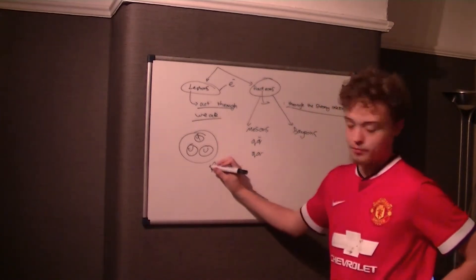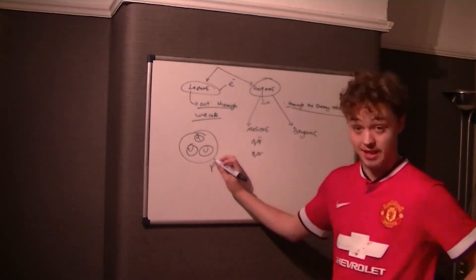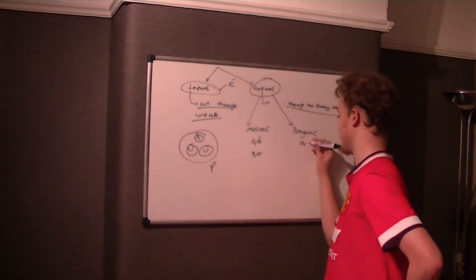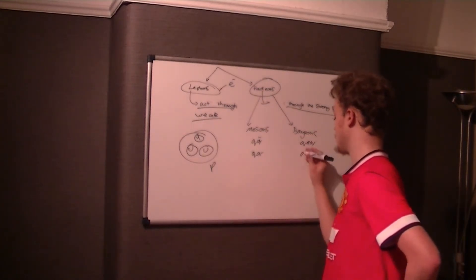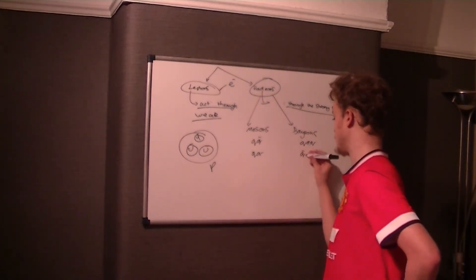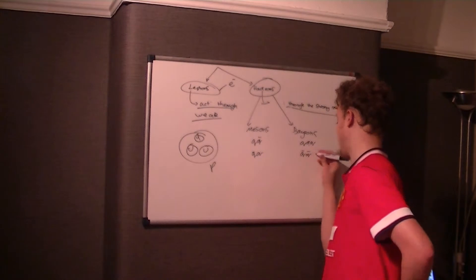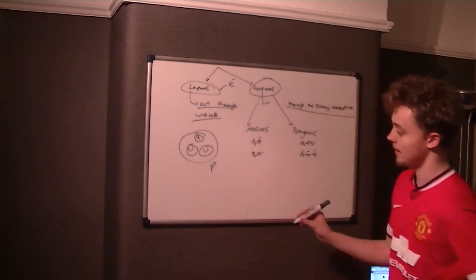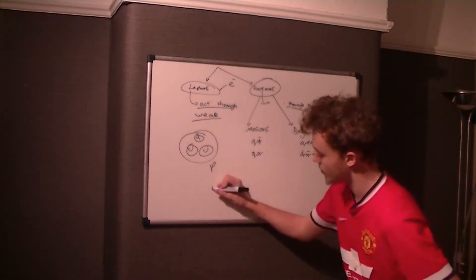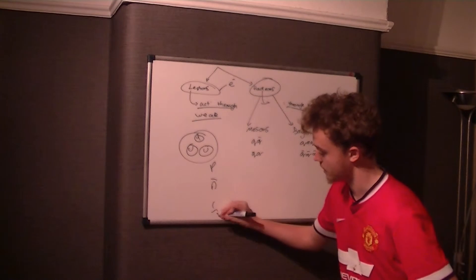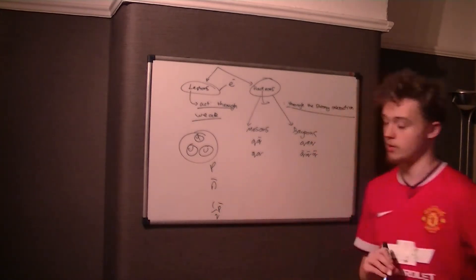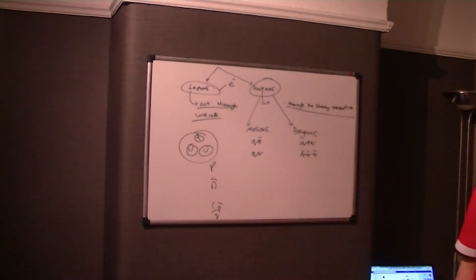A proton is a baryon because it has three quarks. Baryons can be three quarks or three anti-quarks, never a mixture. You can have a proton or an anti-proton, but you can't have half an anti-proton structure — that simply doesn't exist.